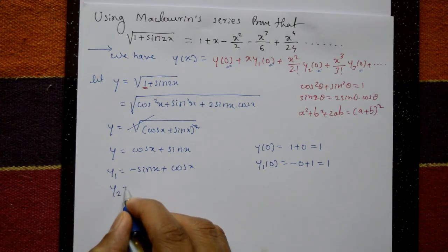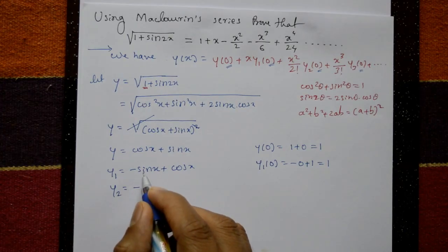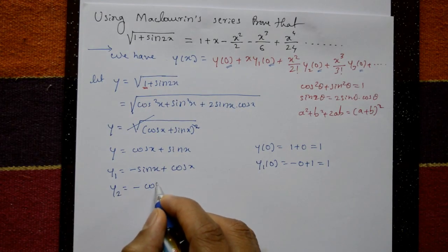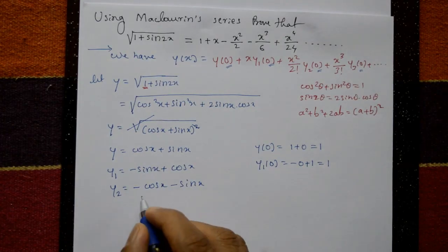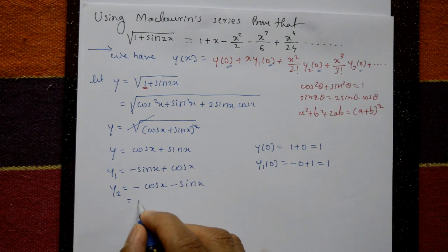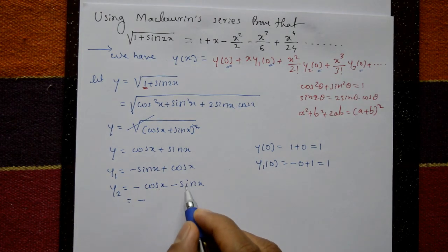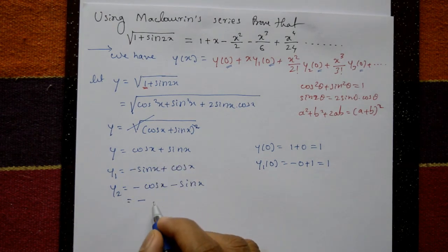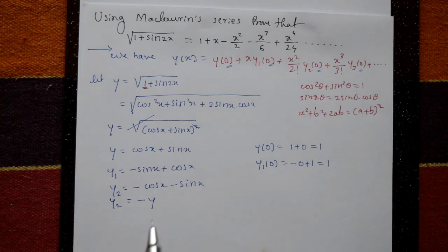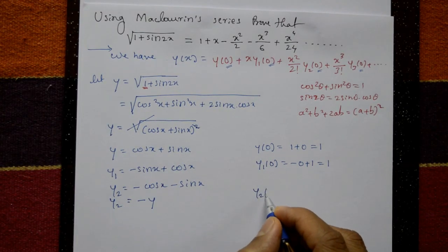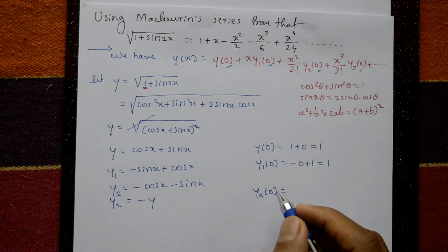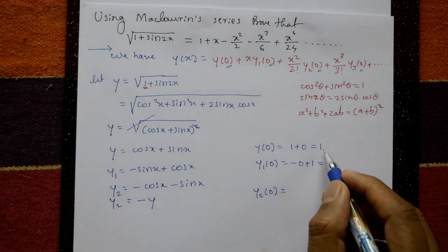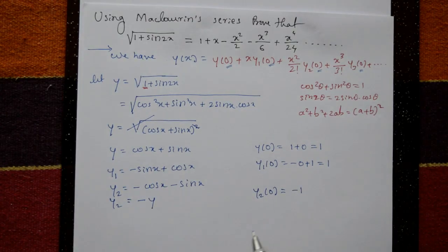Differentiate again: y2(x) = −cos x − sin x = −(cos x + sin x). Put x = 0: y2(0) = −(cos 0 + sin 0) = −(1 + 0) = −1. So y2(0) = −1.